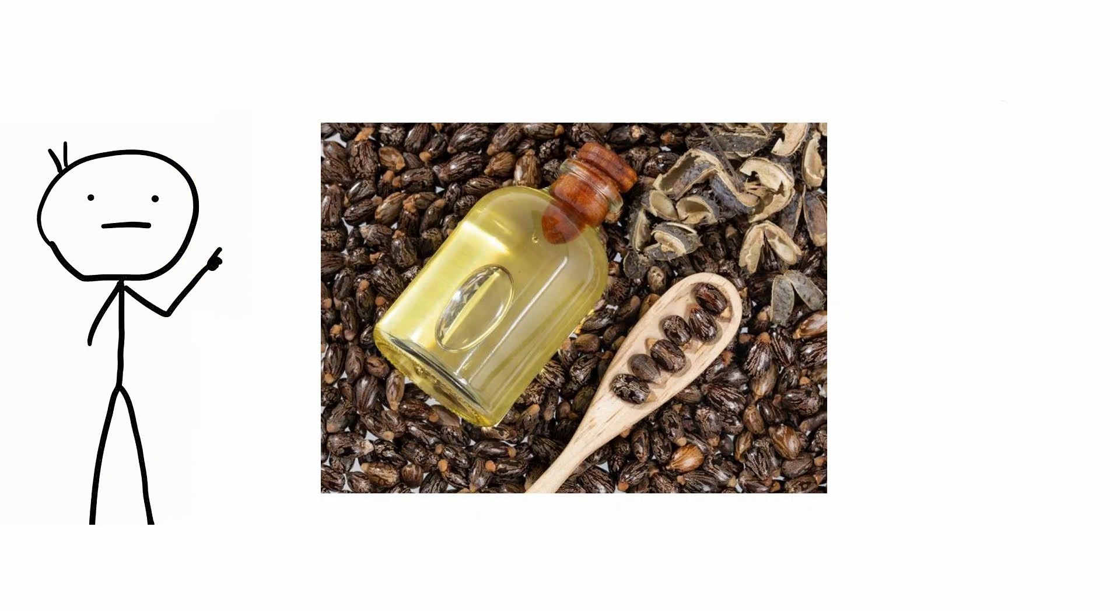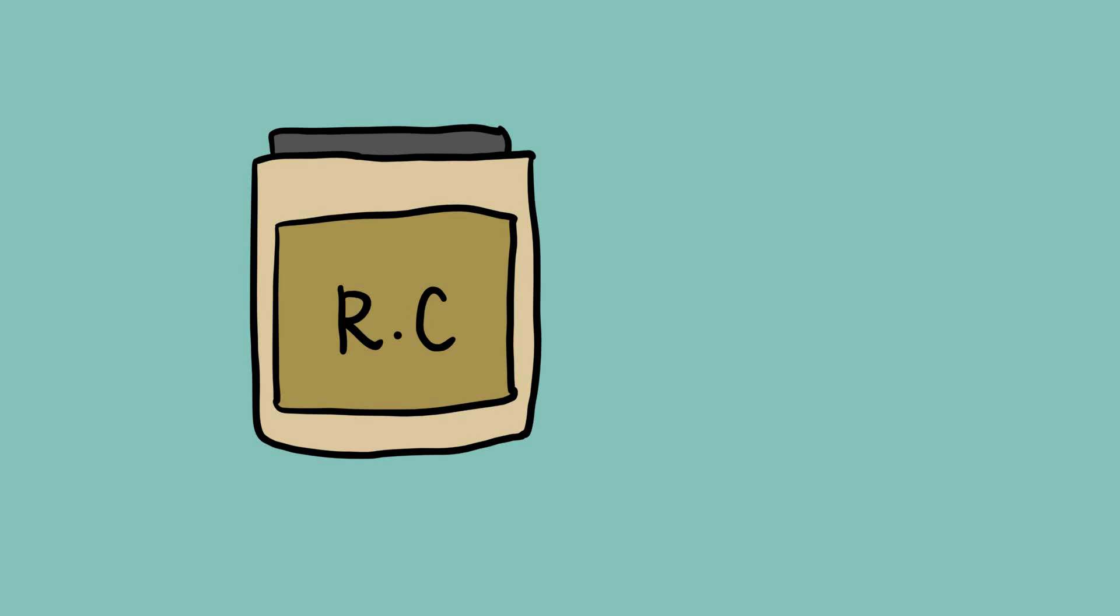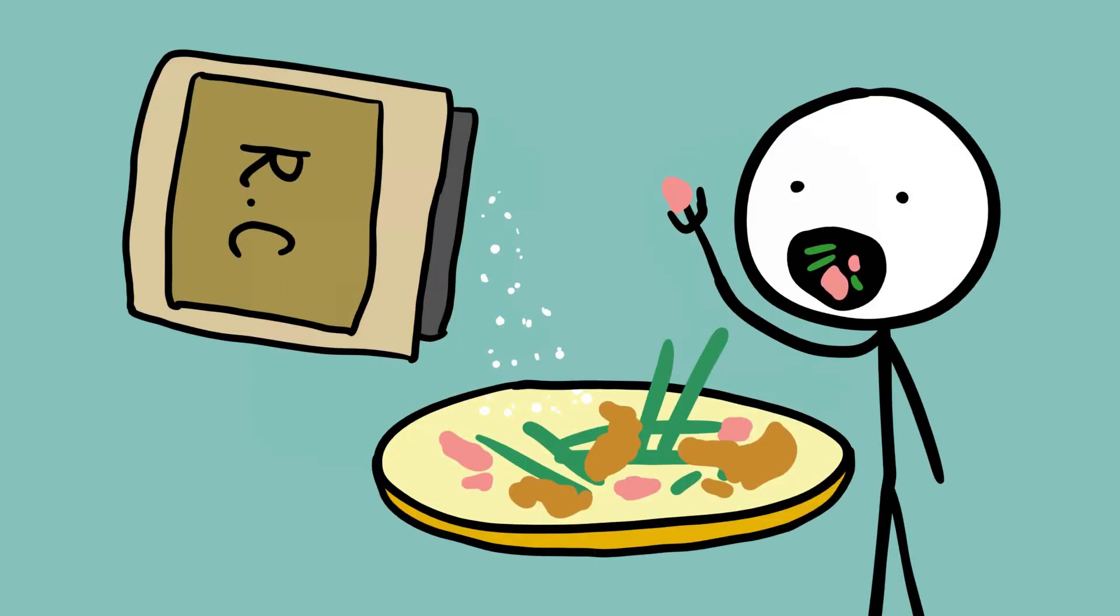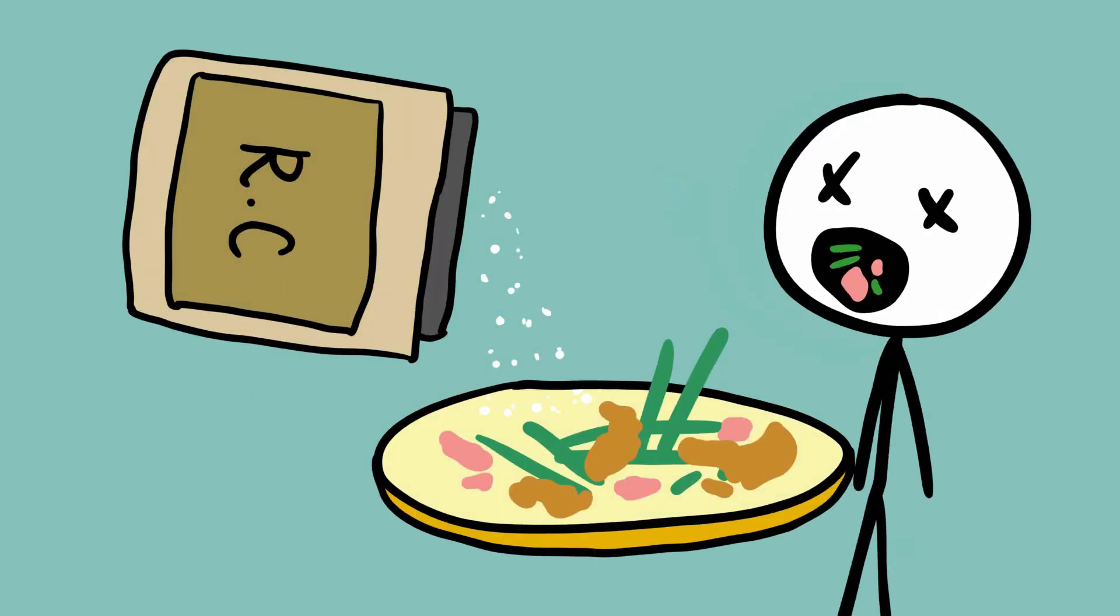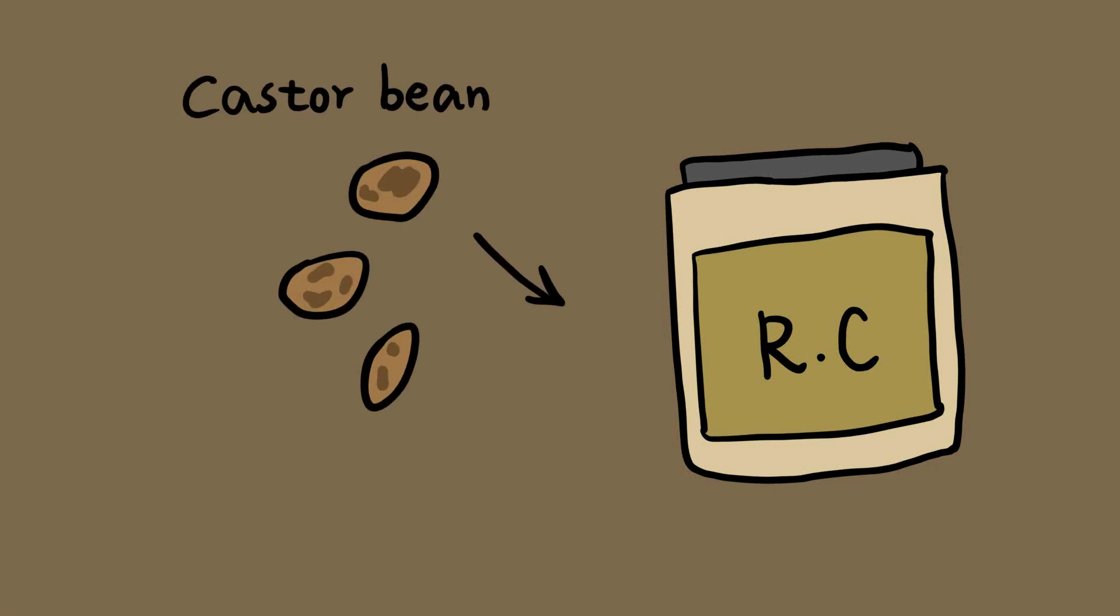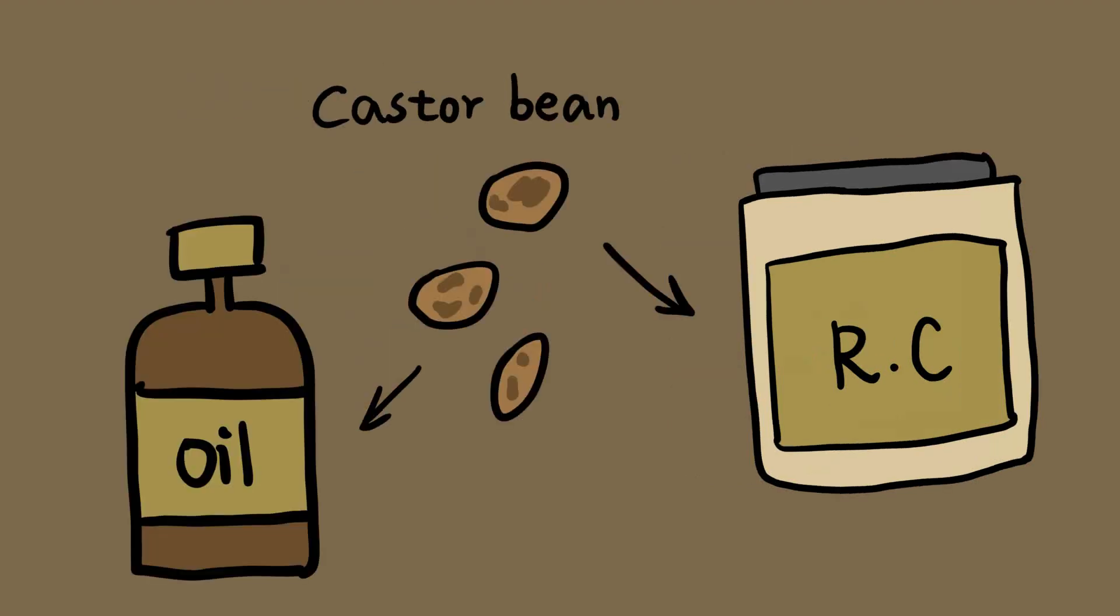Ricin. Whilst castor oil may be touted for its health-giving properties, the other product of this plant, Ricinus communis, is the polar opposite. A dose of less than a sprinkling of salt will kill an adult. It is derived from the castor bean, and it is the part that is left behind after the oil is extracted that is poisonous.